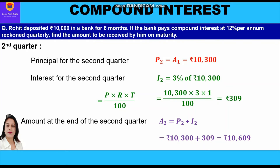Now I will put up a question for you all to solve — please give your answer in the comment section. You can pause the video for a moment. The question is: what is the compound interest which Rohit will receive after six months? That means you have to find the interest Rohit receives from the bank after six months.